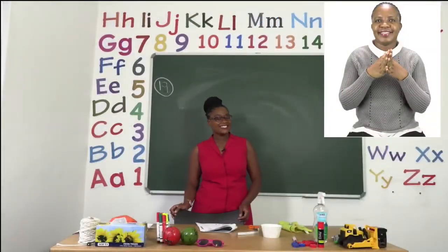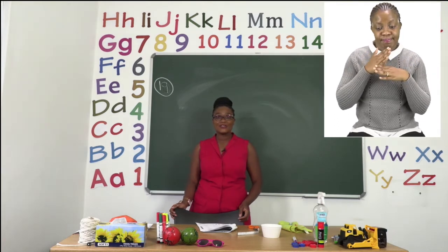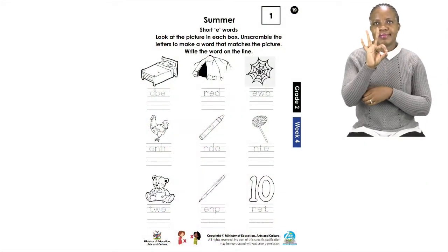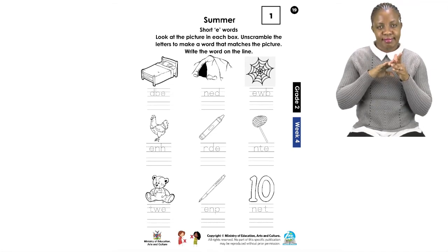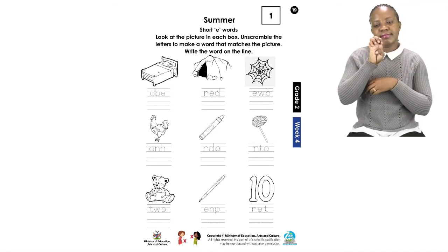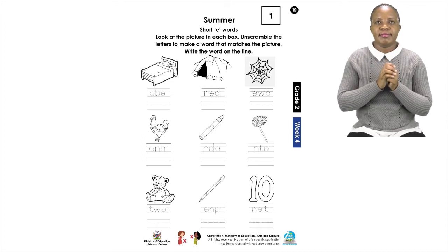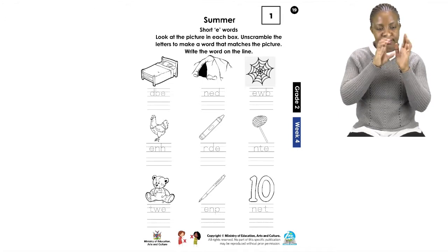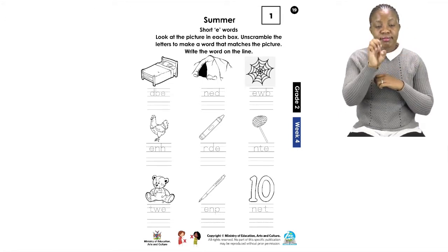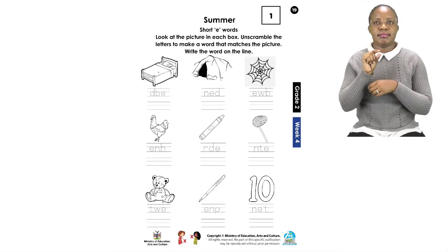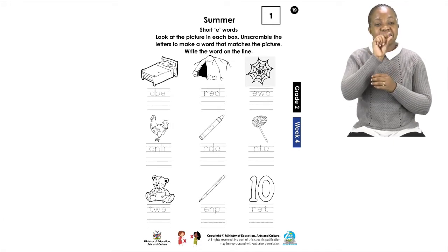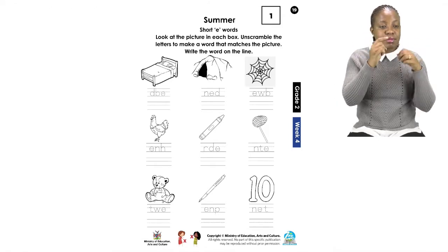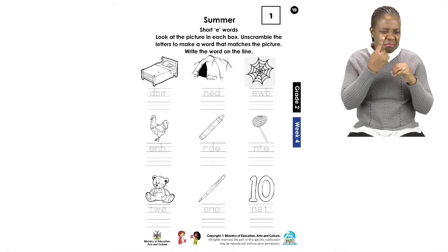Our next exercise, boys and girls, please turn to page 19. Our next exercise is about the short E word or sound. Each of the pictures you can see there have the sound E in them. We are going to unscramble the letters of the word so that it matches the picture. Let's do the first two together.